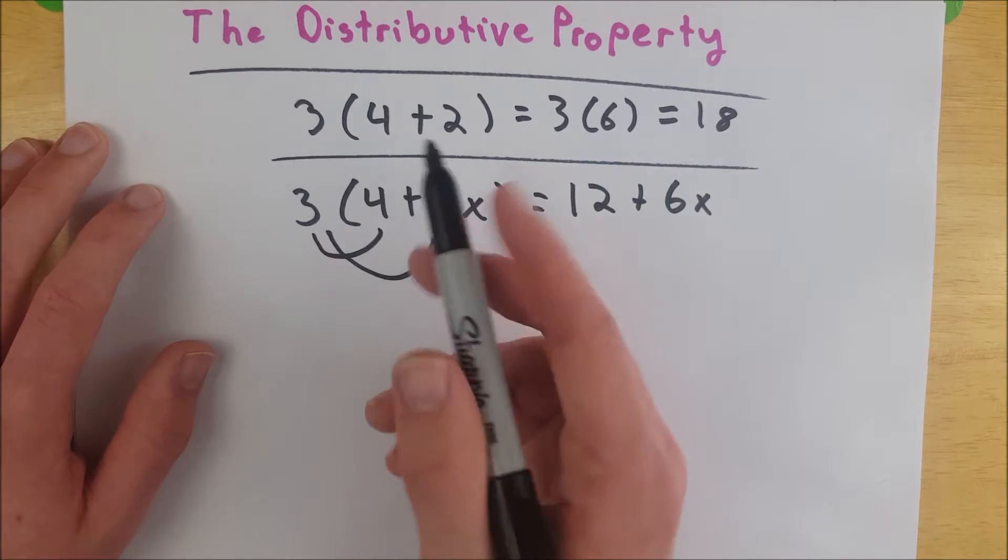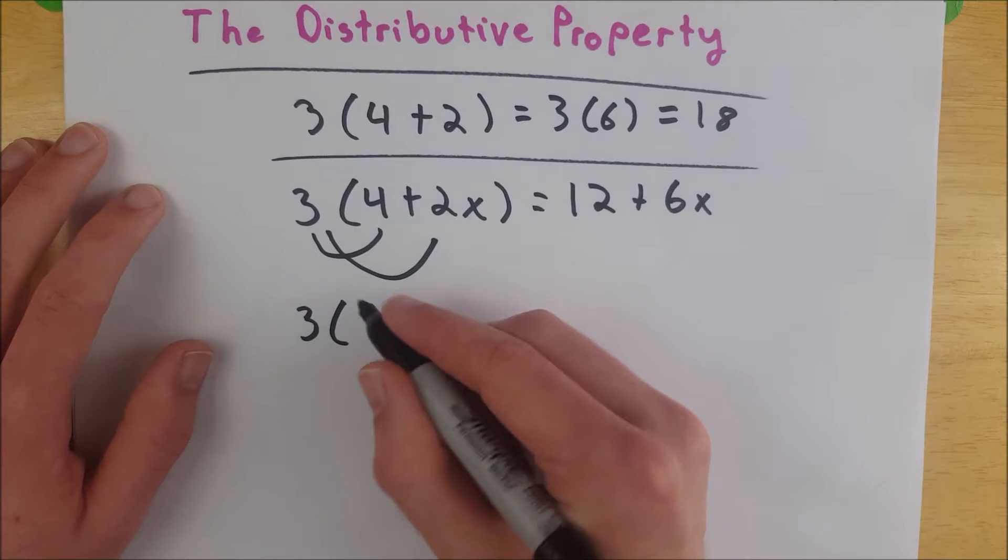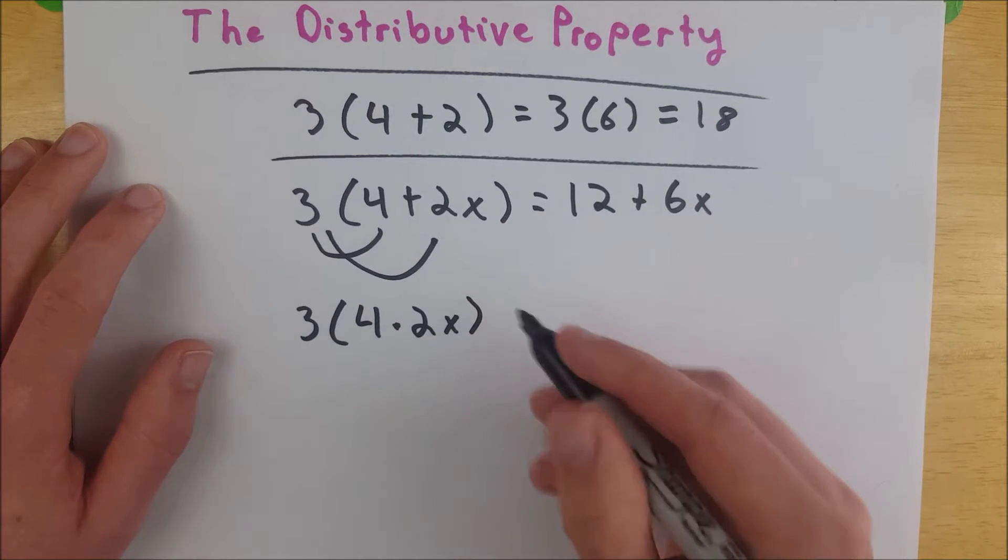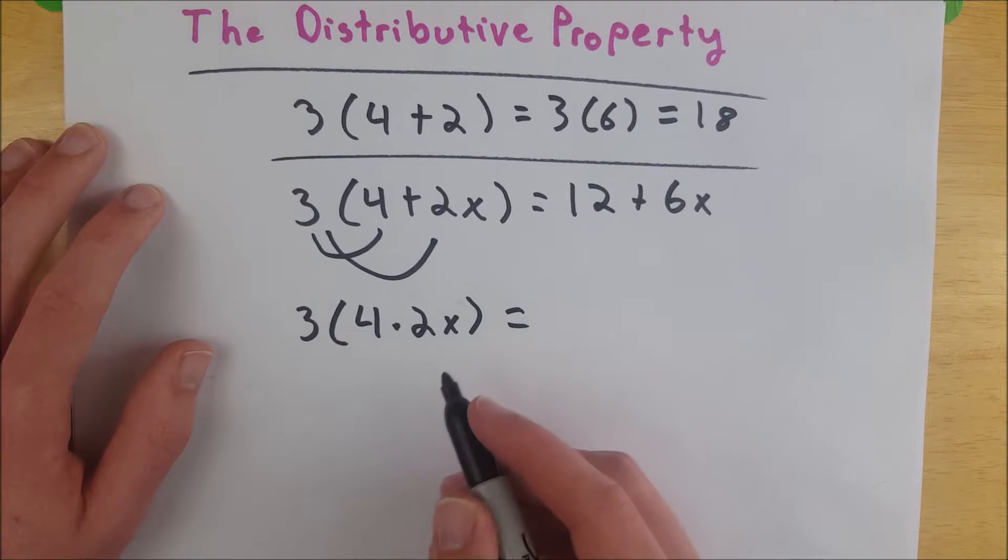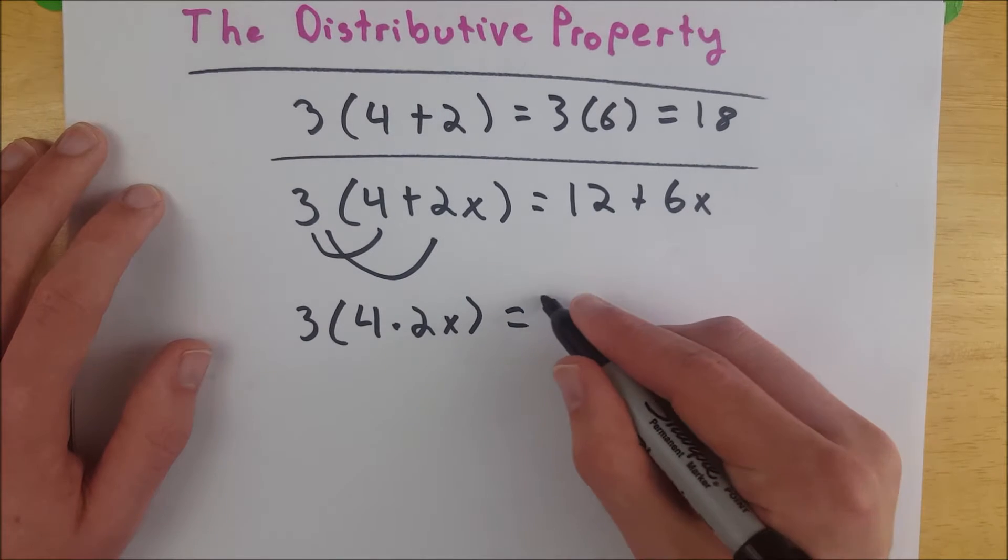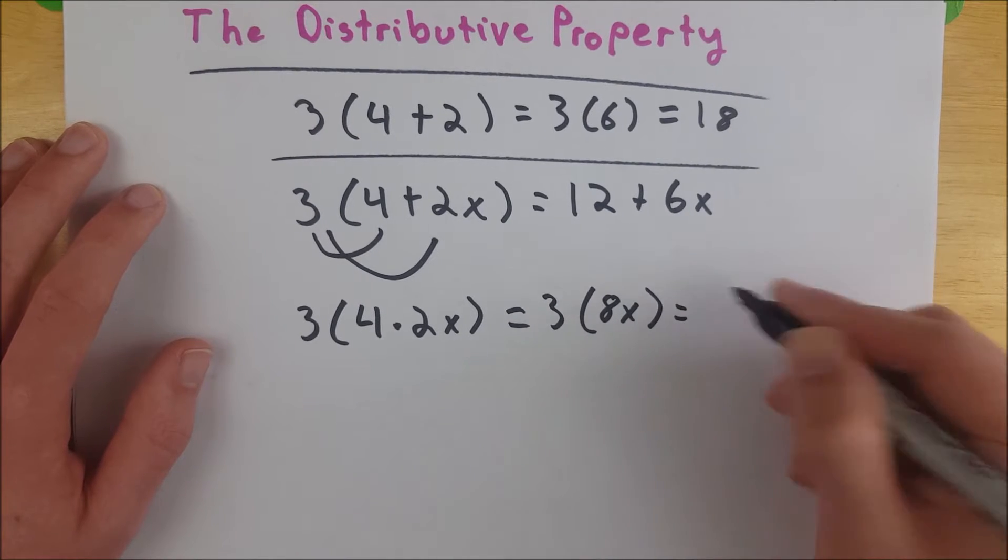Now again, the distributive property only goes across addition and subtraction. So suppose we had 3 multiplied by 4 times 2x. Well, we would just do what's in the parentheses first because we can multiply unlike terms. So this would be 3 multiplied by 8x, and that would just be 24x.